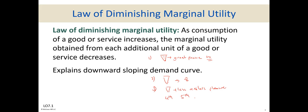That is the law of diminishing marginal utility: when consumption of a good or service increases, the additional utility — the marginal utility — you gain from each unit goes down. This also explains why demand curves are downward sloping. As you consume more, your willingness to pay goes down, which is why individual demand curves slope downward.